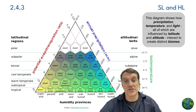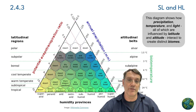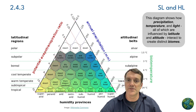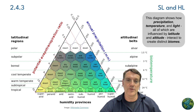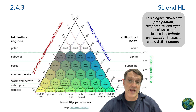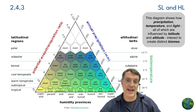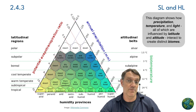Here we see how precipitation, temperature, and light — all influenced by latitude and altitude — interact to create distinct biomes. The pattern shows how these factors vary systematically across different latitudes, creating zones where specific biomes are likely to develop. Understanding these relationships helps us predict how climate change can affect the distribution of biomes.